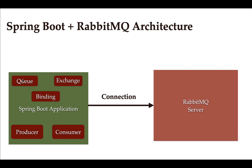Once the Spring Boot application connects with the RabbitMQ server, next we need to create a queue, exchange, and binding in the Spring Boot application. In the next lecture we'll see how to configure queue, exchange, and binding. I'll see you in the next lecture.